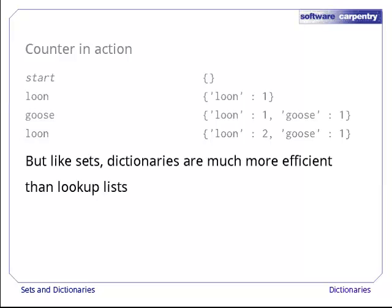So why use a dictionary rather than a list of pairs? Because it is much more efficient. Just like sets, dictionaries are stored using hash tables, which guarantee that finding or modifying values takes roughly constant time. This is a lot better than the list-based method, where the time grows in proportion to the number of pairs in the list.